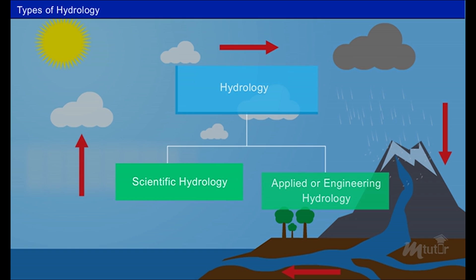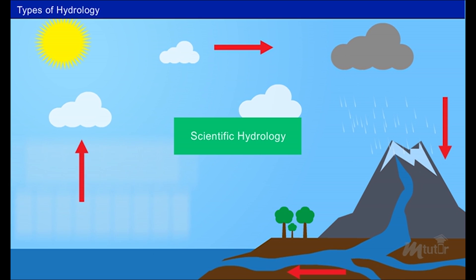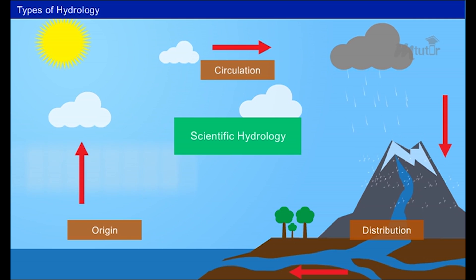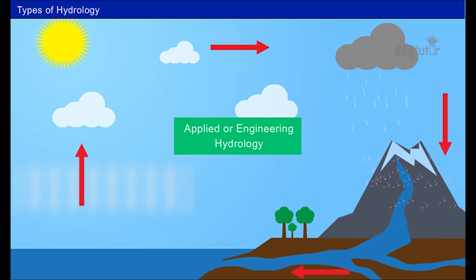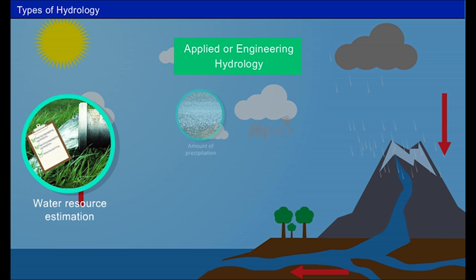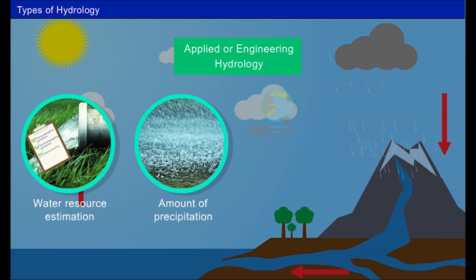Scientific hydrology deals with the study of origin, circulation and distribution from the academic point of view. Applied or engineering hydrology deals with a study related to engineering applications such as water resource estimation, the amount of precipitation, runoff etc. and the study of problem related to water.